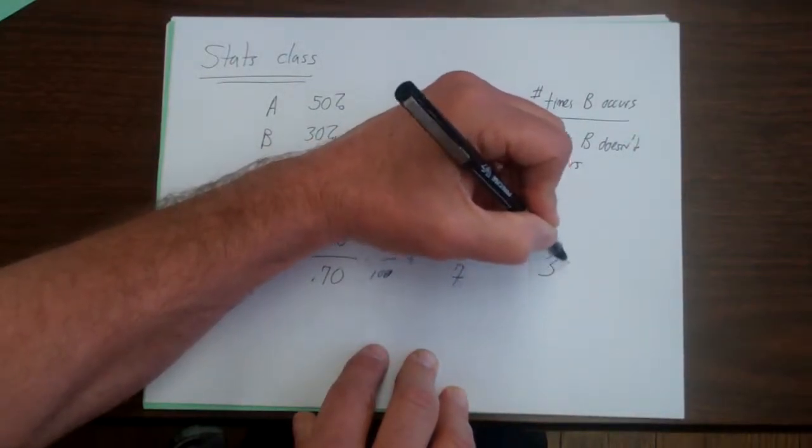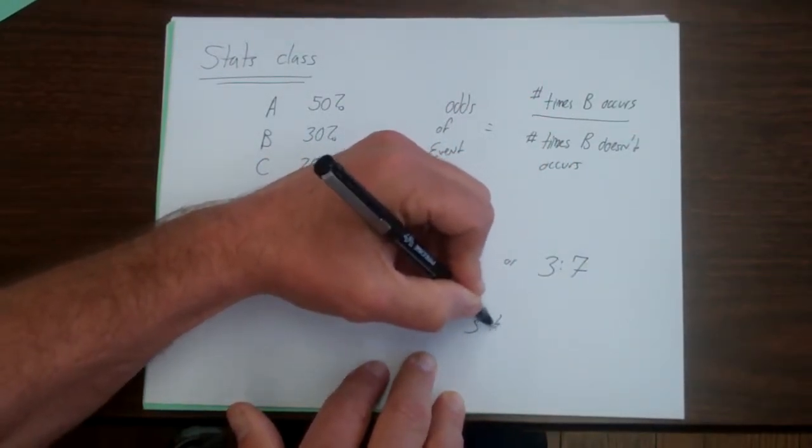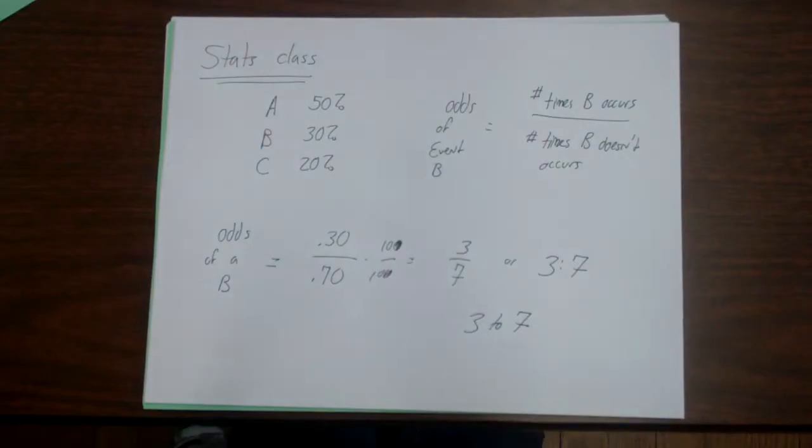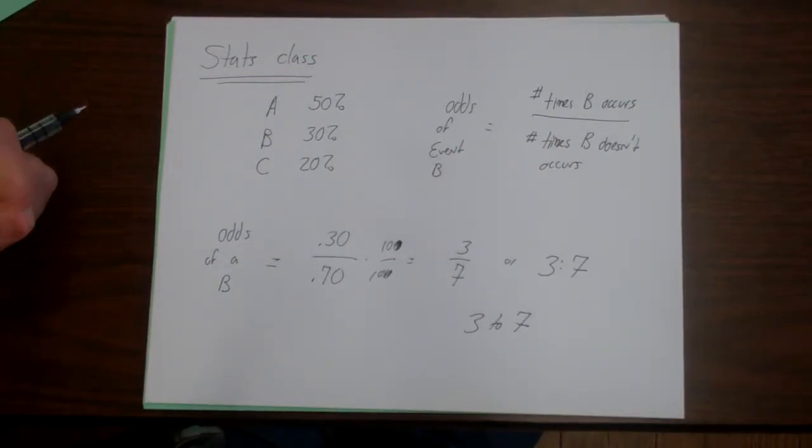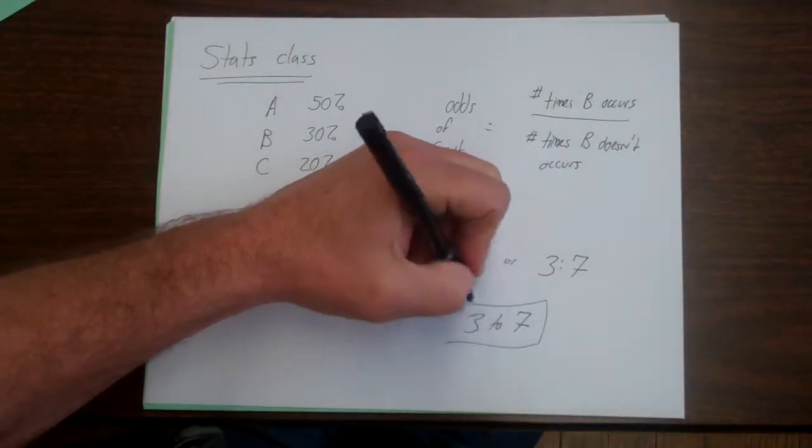Or sometimes it's written like this, 3 to 7. And that's how we do odds. And this is often used quite a bit when we're looking at games of chance. Horse racing, famously, is like this. So we simply say here the odds are 3 to 7.